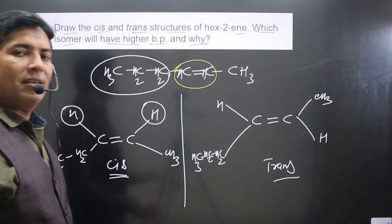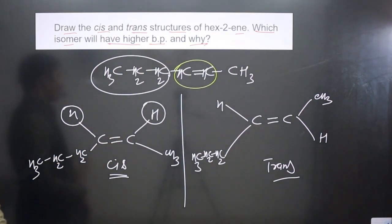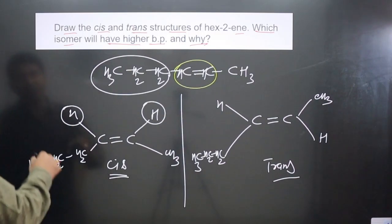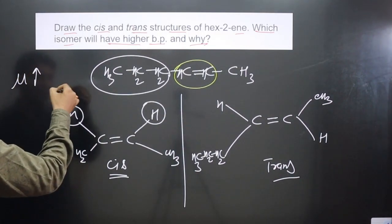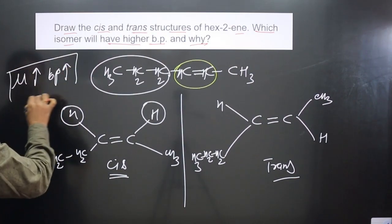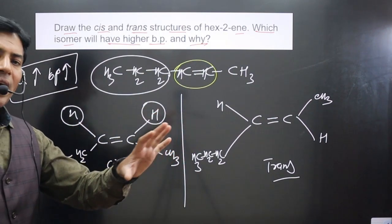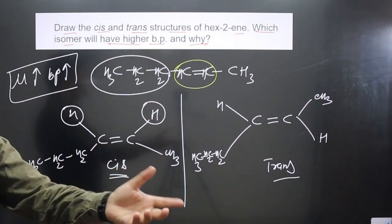Both the cis and trans structures are ready. Now we compare which has the higher boiling point. To determine the boiling point trend, we use dipole moment — higher the dipole moment, higher the polarity, and higher the boiling point. So the compound with the higher dipole moment will have the higher boiling point.